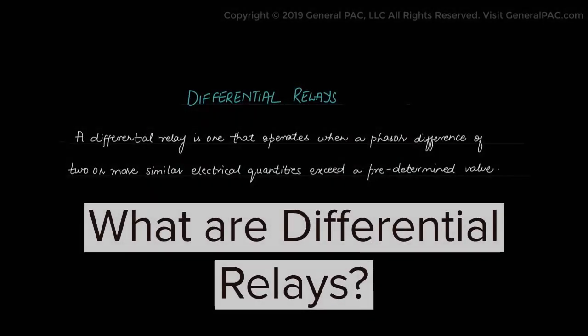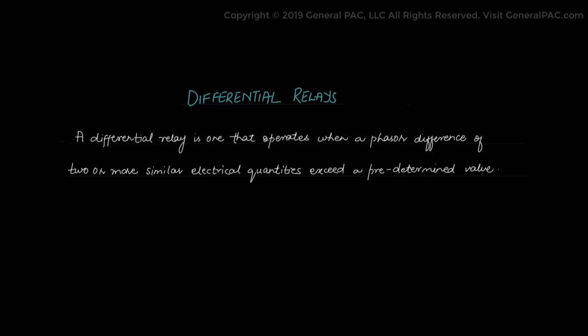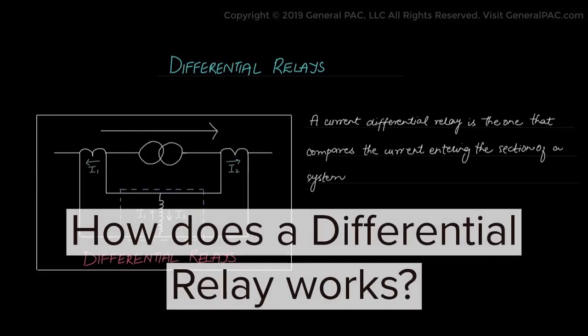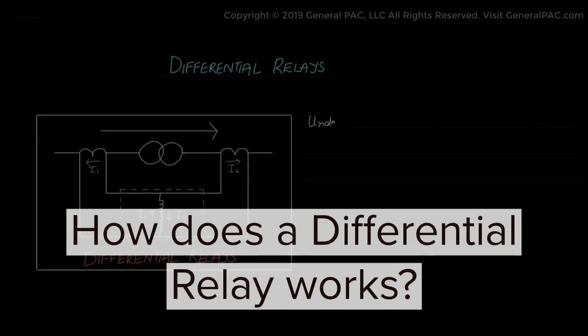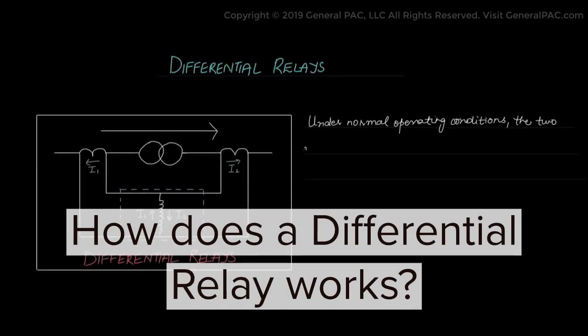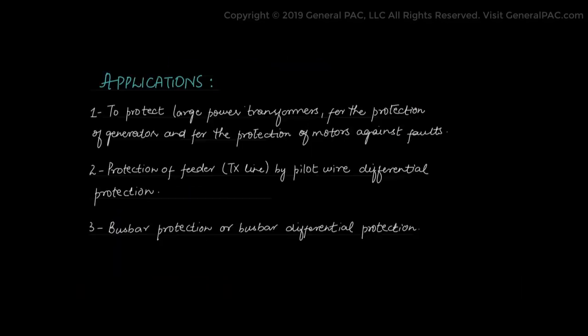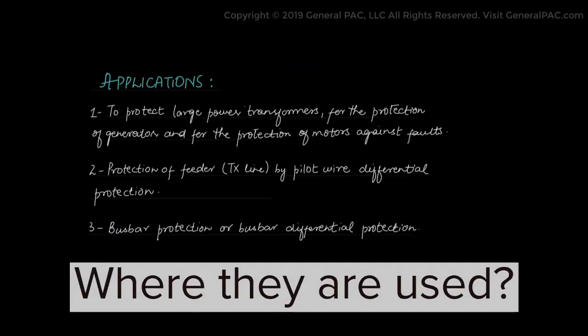Or an angle difference, or both magnitude and angle. So a phasor difference of two or more similar electrical quantities entering a section of the system, with the current leaving the section. Under normal operating conditions the two currents are equal, but as soon as a fault occurs — this includes communication-assisted differential protection.